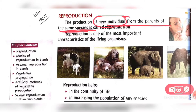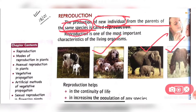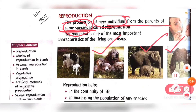This process happens from parent to offspring — for example, from parent elephant to baby elephant, from parent dog to baby dog, from parent horse to baby horse. The important point is that these individuals must be of the same species. This production of new individuals from the parent species is called reproduction.